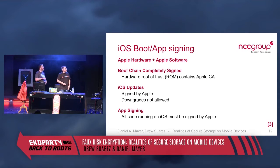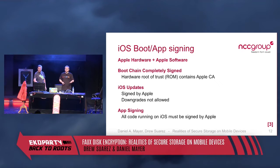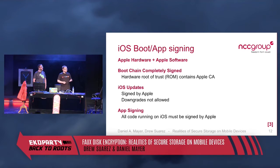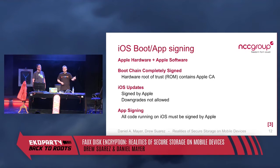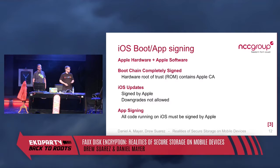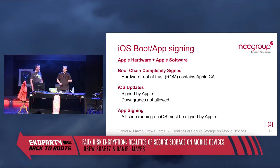One advantage iOS and Apple have over Android is that they control both hardware and software, so they can build hardware that supports software features and vice versa — allowing security to be built in early. For iOS, the boot chain is completely signed: from when the device starts booting, the bootloader is signed and checked, then each step checks the next until the OS is up. All signature checks are done in hardware, preventing code injection during boot. All installed updates are also signed, so you can't install malicious updates.